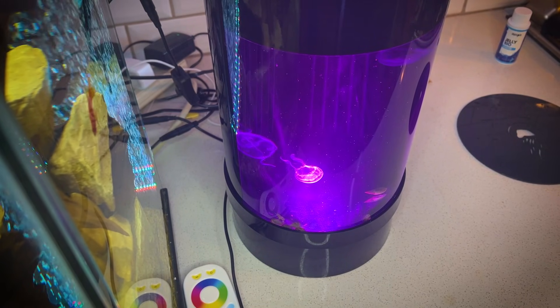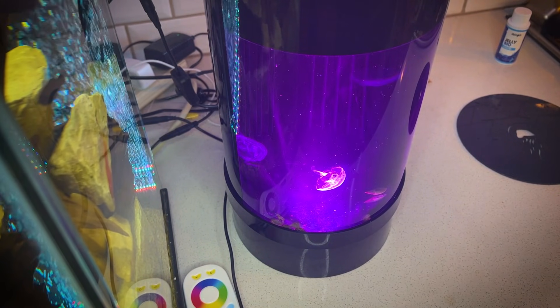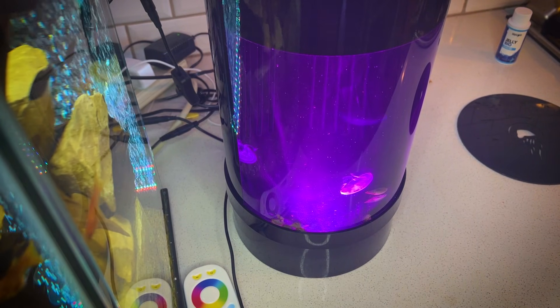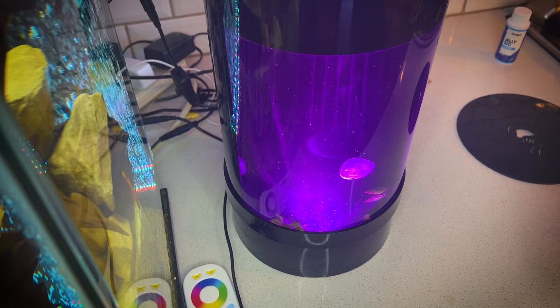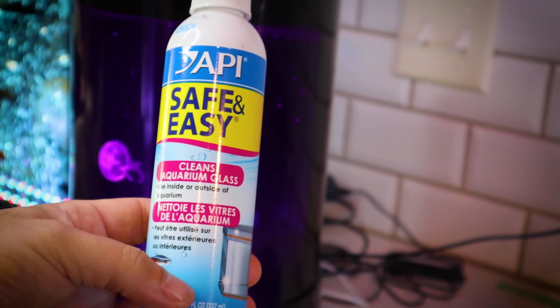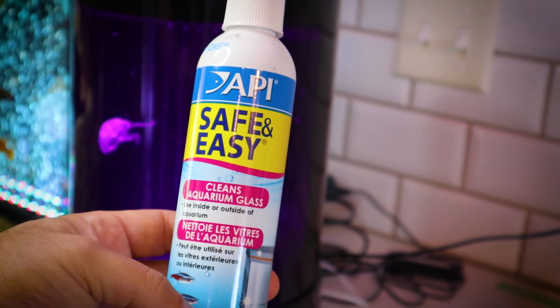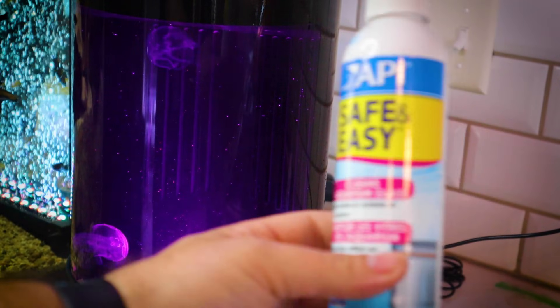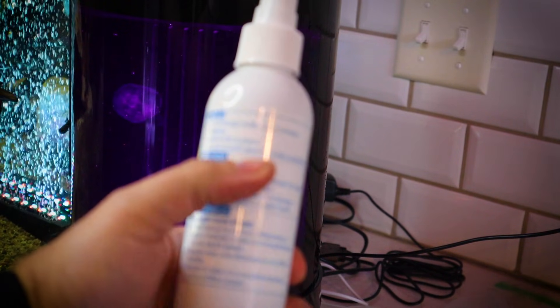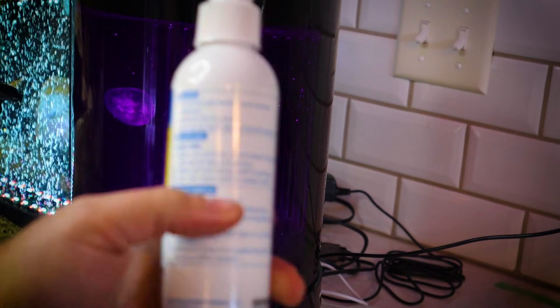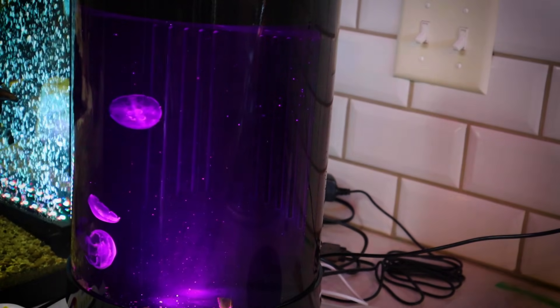Now that we have this thing completely cleaned out, the last thing I want to do is clean the glass off itself. I'm going to use some of my favorite products from API, which is this API Safe and Easy Glass Cleaner. Even though it says it's for aquarium glass, it is actually for both glass and acrylic aquariums, which this tank is made of acrylic.